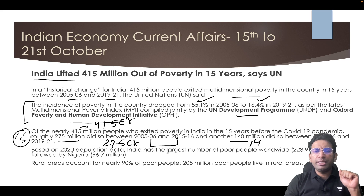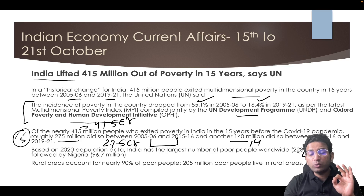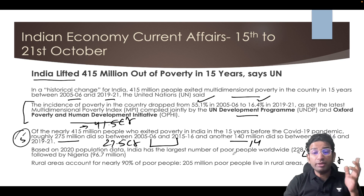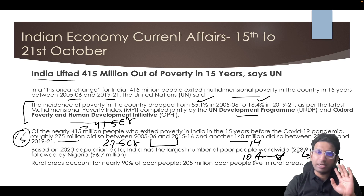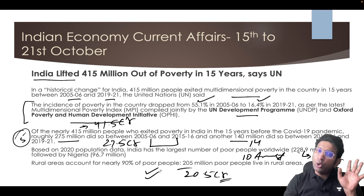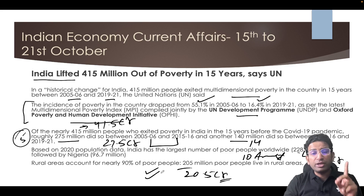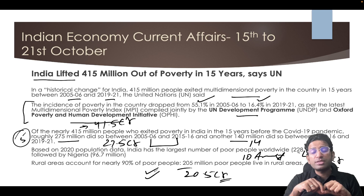Based on 2020 population data, India still has the largest number of poor people worldwide at 228.9 million. Despite a huge number exiting poverty, around 23 crore people are still living below the poverty line as per this index. Of these, around 20.5 crore live in rural areas — meaning the majority of poor people are in rural India, which is a priority area for the government.